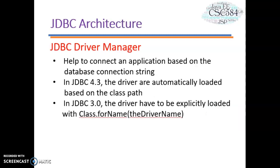Let's look at the JDBC architecture. This is another main component of JDBC, which helps connect an application based on the database connection string. The current version of JDBC is 4.3. With the latest version, drivers are automatically loaded based on their class path, so no additional work is required as a developer. For previous versions such as 3.0, the driver had to be explicitly loaded with Class.forName() and the driver name as a parameter.